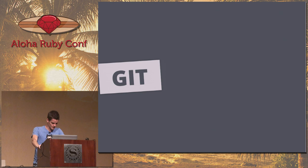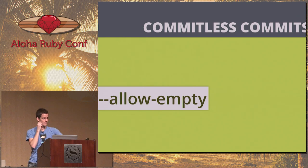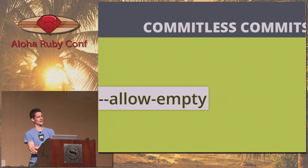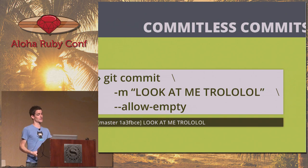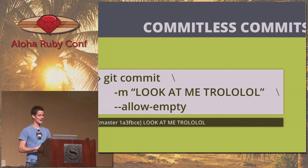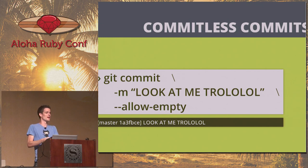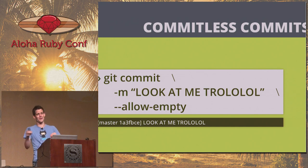Now we get to Git — everyone's favorite confusing thing. We sometimes do commitless commits at GitHub using --allow-empty. You can do a commit without any diff or content, add a message, and you'll actually make the commit. You could troll your coworkers with this, but it's also useful when you need a commit to test a hook without making a real change.